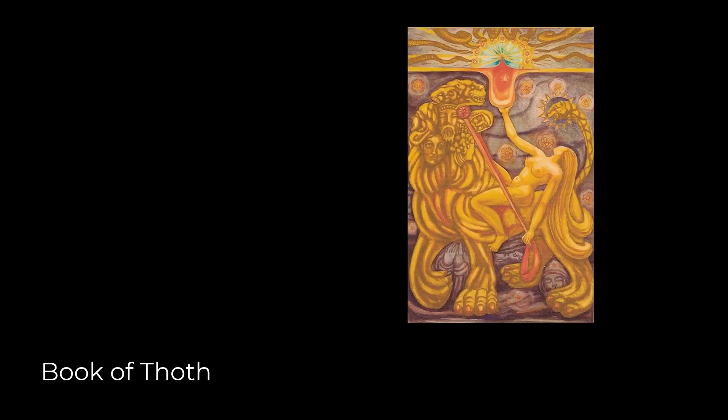Many chapters relate to the Tarot. For example, we have 49, Warata Blossoms; 61, the Fool's Knot; and 78, Weal and Woe.